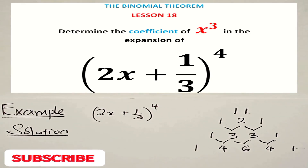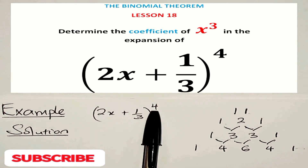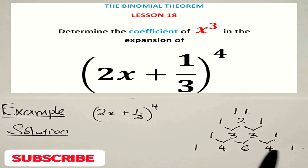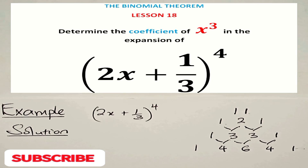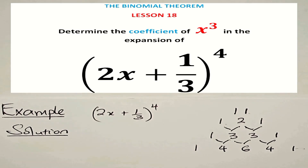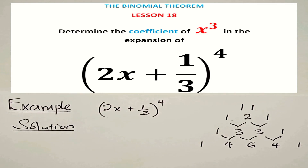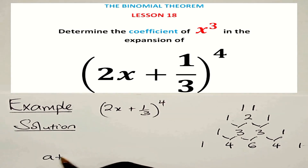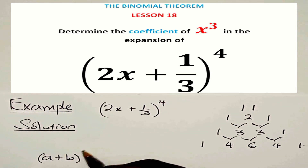Since this binomial is to the power of 4, we are going to consider the fourth row. And then we are going to create a formula that we are going to use. That formula will be a plus b to the power of 4.